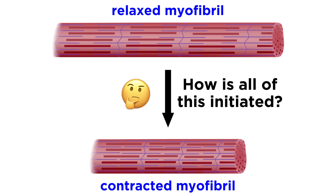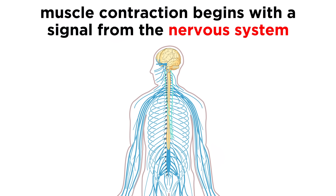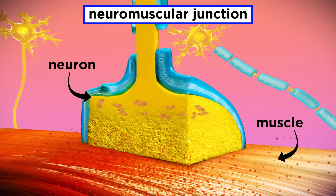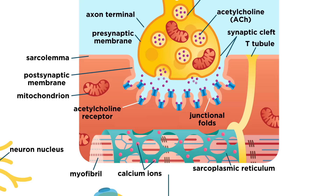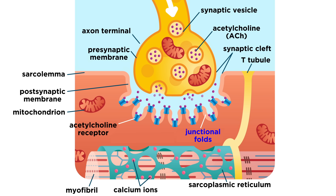Now the question is, how is all of this activity initiated? As we said, this begins with a signal from the nervous system. We will examine that system in detail a bit later, but for now we can just examine the interface between the nervous system and a skeletal muscle. This is called the neuromuscular junction. Each muscle fiber has one, and these sections, called axon terminals, are nearly touching the muscle fiber, separated only by a thin space called the synaptic cleft, where the muscle produces junctional folds within the postsynaptic membrane. The axon terminal has lots of synaptic vesicles, which are like little bubbles, containing acetylcholine, which is a neurotransmitter.